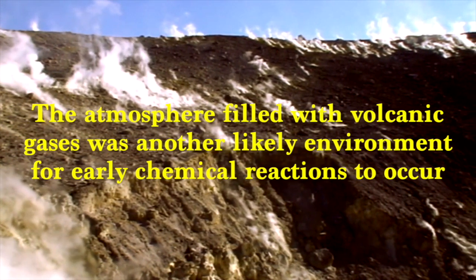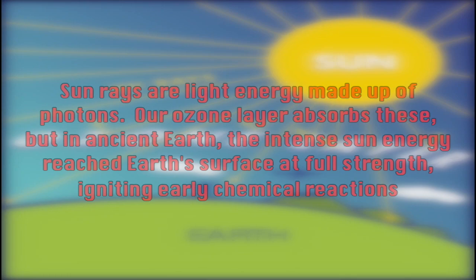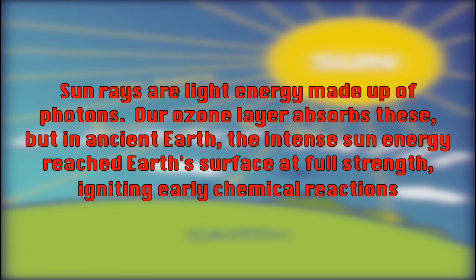These early reactions needed activation energy, and they got that from the Sun. The Sun emits energy in what's called photons, and these high-energy photons reach Earth's surface. Today our ozone layer absorbs a lot of this high-intensity radiation, but when the Earth was first forming, this ozone layer most likely didn't exist. Instead, the atmosphere was filled with volcanic gases, which allowed a very large amount of high-energy photons to bombard the planet and ignite chemical evolution.